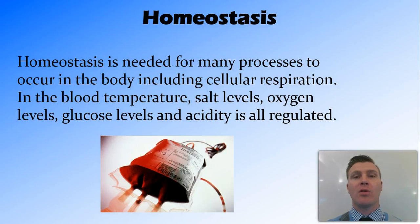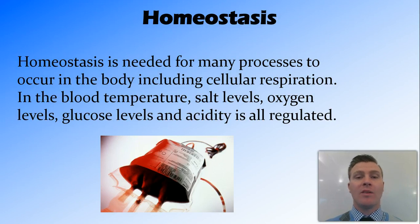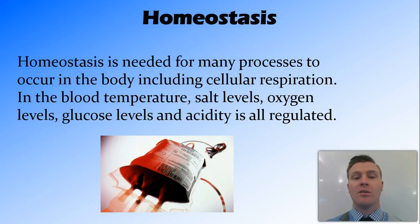There's a whole heap of processes within the body that are maintained through homeostasis. Some of the processes that maintain a constant environment in the blood include the maintenance of temperature, salt levels, oxygen, glucose, and acidity. All these things are controlled as part of homeostasis throughout the body.